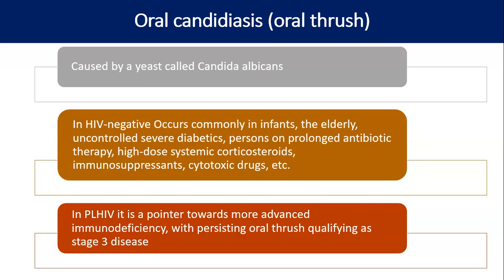But in PLHIV, it is quite common to find oral candidiasis or esophageal candidiasis, particularly when the disease is advanced, and it is a pointer towards advanced disease in the case of PLHIV — that means advanced immunosuppression.